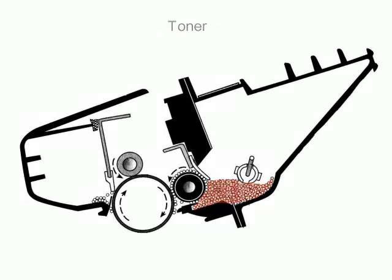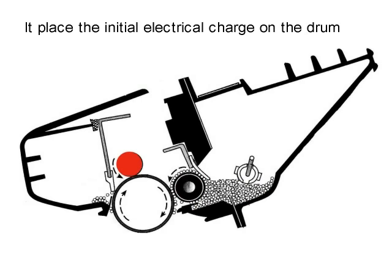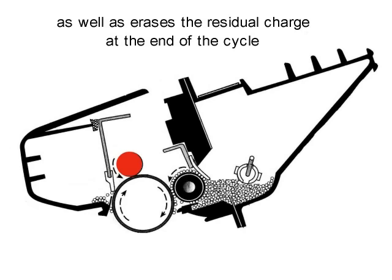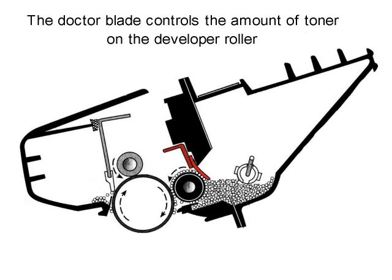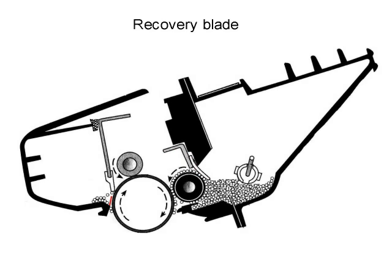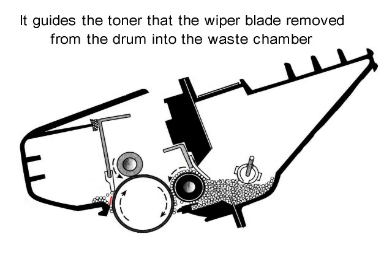Toner. Charge roller: it places the initial electrical charge on the drum, as well as erases the residual charge at the end of the cycle. Developer roller doctor blade: the doctor blade controls the amount of toner on the developer roller. Recovery blade: it guides the toner that the wiper blade removed from the drum into the waste chamber.